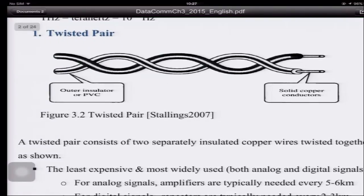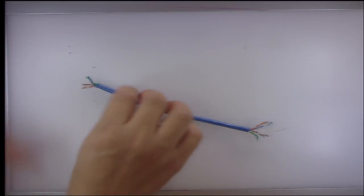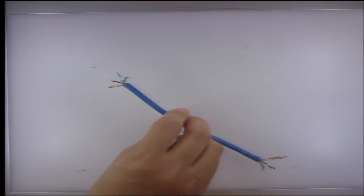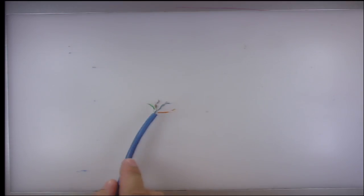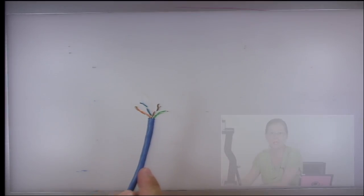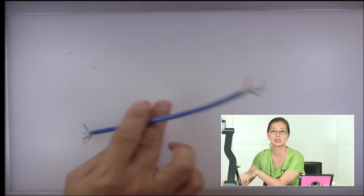Let's look at the twisted pair. It has an outer insulator with copper wire inside. In the cable shown here, there are many pairs — inside is copper — and multiple pairs are combined into one cable. This particular cable has four pairs of twisted pairs inside.